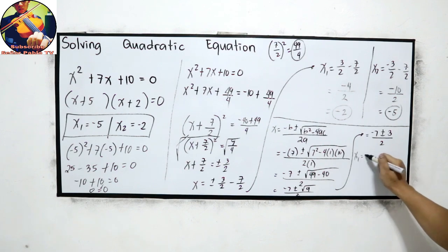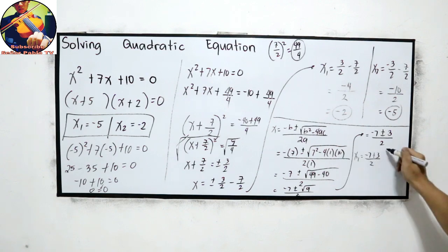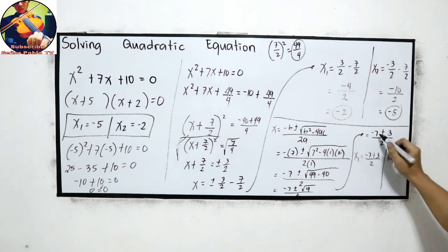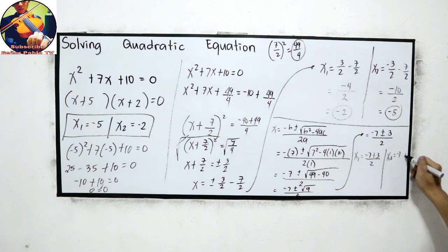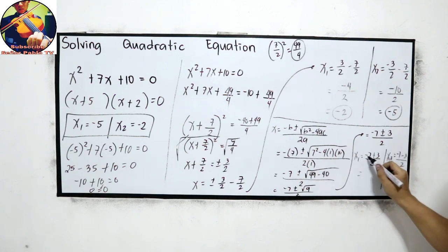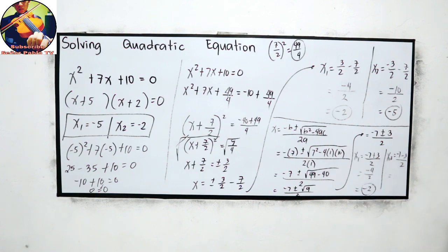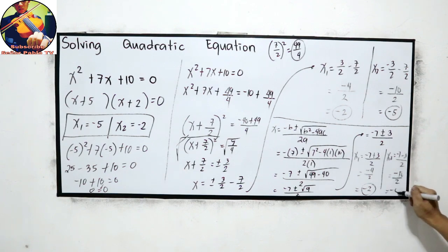For x sub 1, we have negative 7 plus positive 3, over 2. For x sub 2, negative 7 minus 3, all over 2. So x sub 1 is negative 4 over 2, which is negative 2. And x sub 2 is negative 10 divided by 2, which is negative 5.